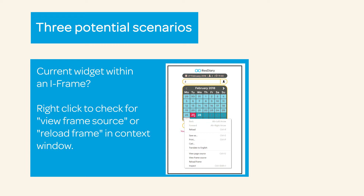Iframes are treated as a separate website within a page. This results in all bookings being attributed to a referral source inside your site, rather than the original location. Although there are ways to overcome this, the accuracy of the reporting here can never be guaranteed.